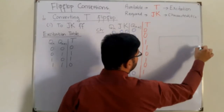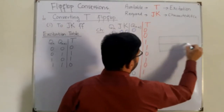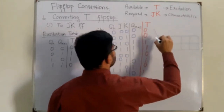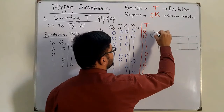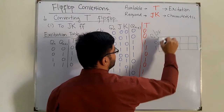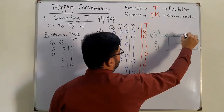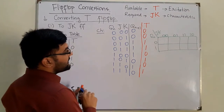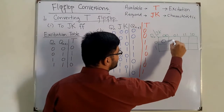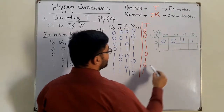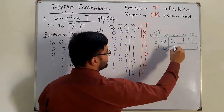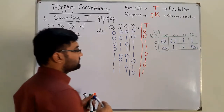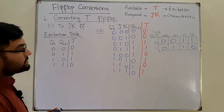Now simplify the boolean expression by finding the expression for input T using a K-map in terms of Qn, J, and K. Filling the K-map: 0, 0, 1, 1, 0, 0, 1, 1, 0, 1, 0, 1, 0, 1.